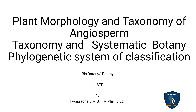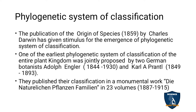In this video, we are going to discuss the phylogenetic system of classification in taxonomy and systematic botany in plant morphology and taxonomy of angiosperm. Phylogenetic system — phylogeny deals with evolution. It is based on Charles Darwin's Origin of Species, which gave way for the phylogenetic system of classification. The publication of Origin of Species in 1859 by Charles Darwin gave stimulus for the emergence of the phylogenetic system of classification.